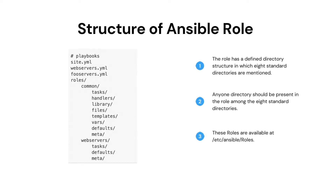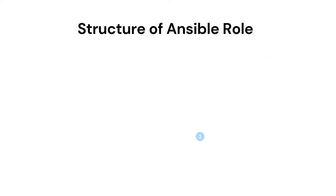The role has a standard structure. Ansible role has 8 standard directories we can create in the role. It is not mandatory to have all the directories in a role, but it is mandatory to have at least one directory inside the role. It includes tasks, handlers, library, files, templates, vars, defaults and meta. The default directory where we create a role is /etc/ansible/roles. Inside this directory, we can create multiple roles as per our requirement. As shown in the image, we have few playbooks like web server or site, and we have two roles: common and web servers.